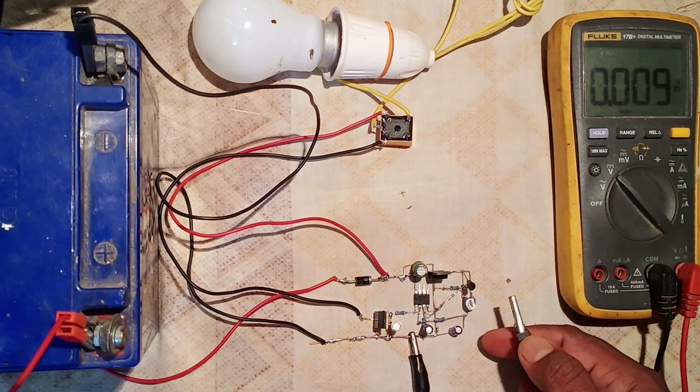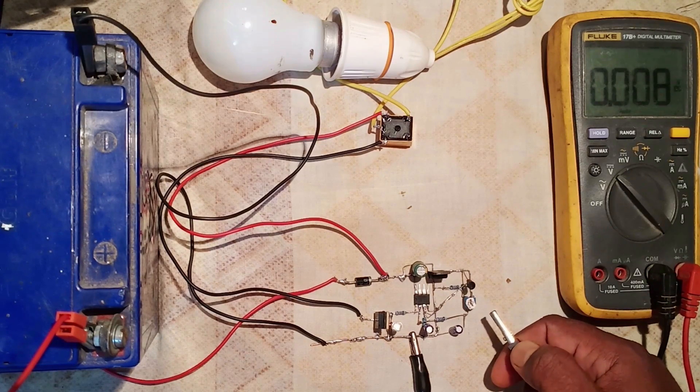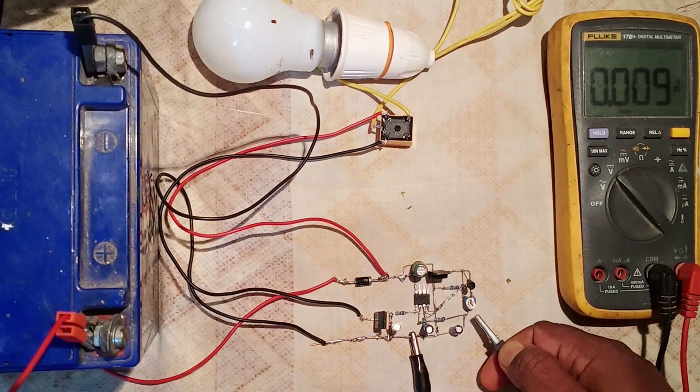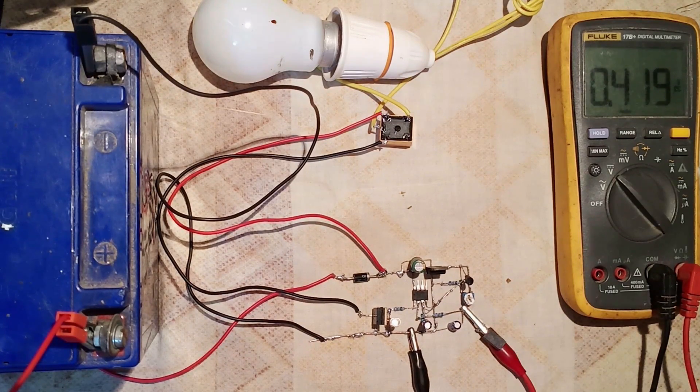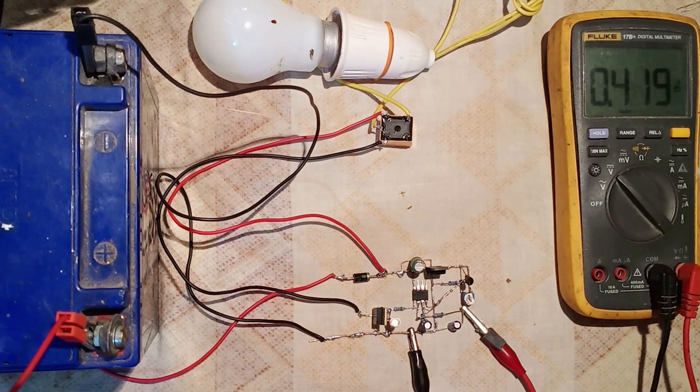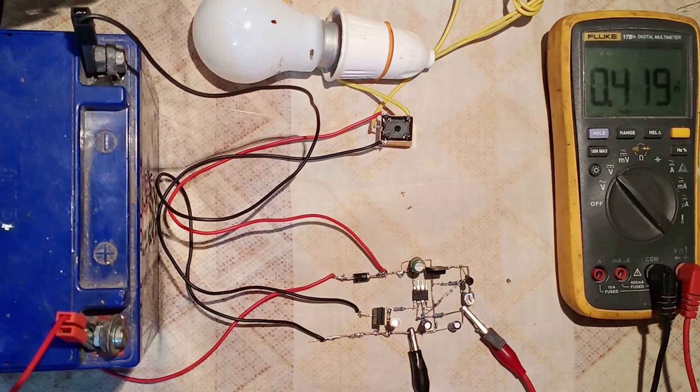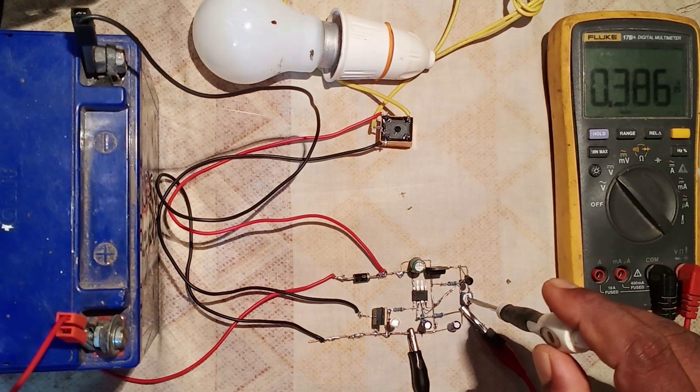Suppose we need to set the temperature at 30 degrees Celsius. For that, the voltage we need to set is 38 multiplied by 10, which equals 380 mV. So let's set 380 mV by moving this preset or variable resistor.